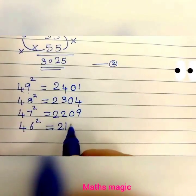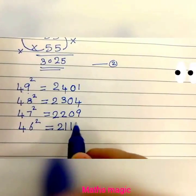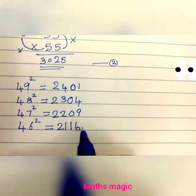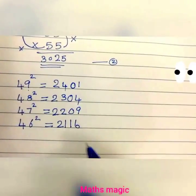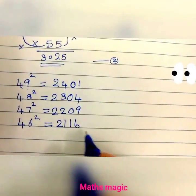The square of 4 is 16. So 46 squared is 2116.